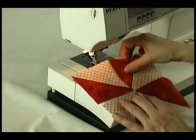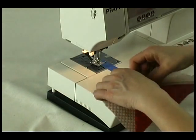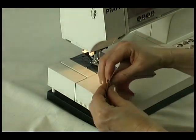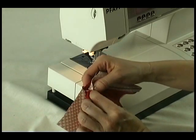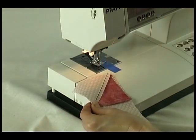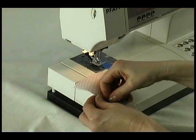Matching the seam lines and with right sides together, layer the top and bottom units. Nest the unit seam allowances together before sewing. This means the seam allowance of each unit is going in the opposite direction. Pin the units together where the seams meet.